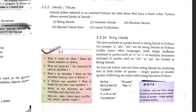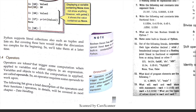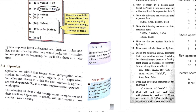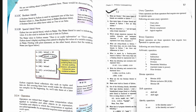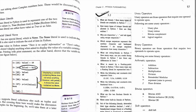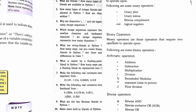Next, operators. Operators are tokens that trigger some computation when applied to a variable. There are many types: unary operators, binary operators, and bitwise operators. Unary operators require one operand to operate upon. Examples of unary operators are unary plus, unary minus, and bitwise NOT.